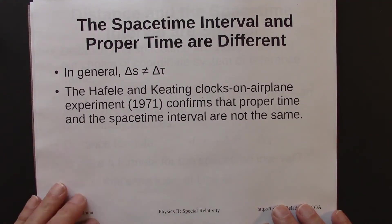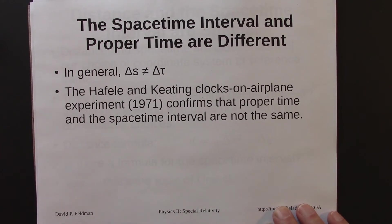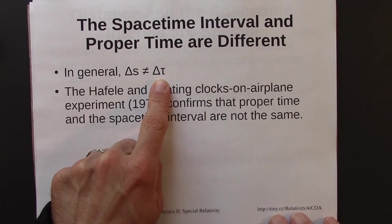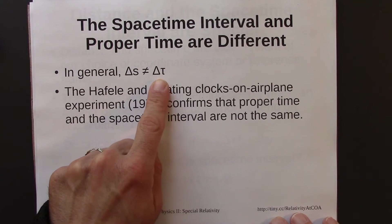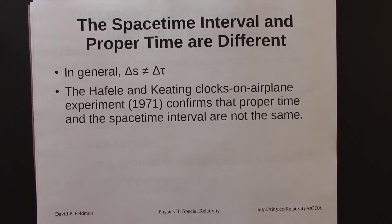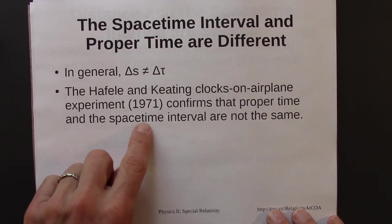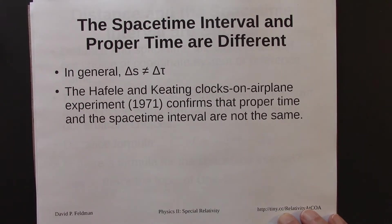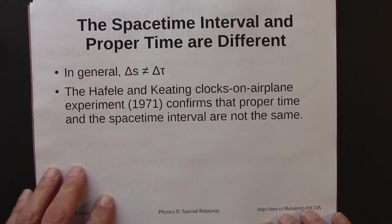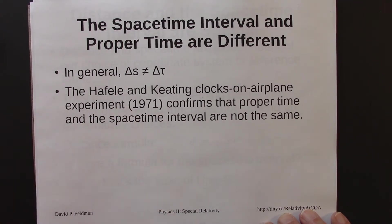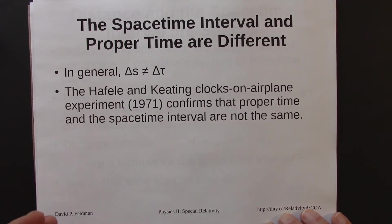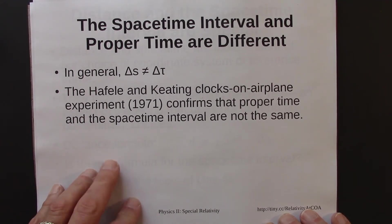The space-time interval and proper time are different — in general, delta s does not equal delta tau. This was experimentally tested in 1971, and there have been other tests as well. This was a particularly nice test involving clocks on airplanes, and it confirmed that proper time and the space-time interval indeed are not the same.